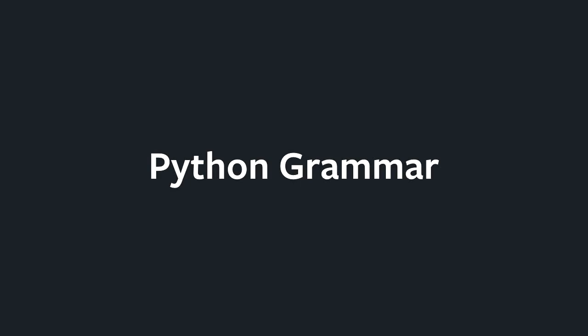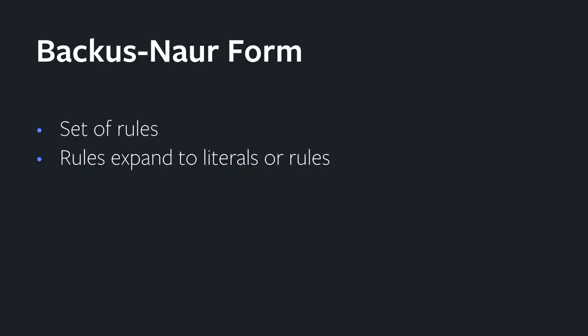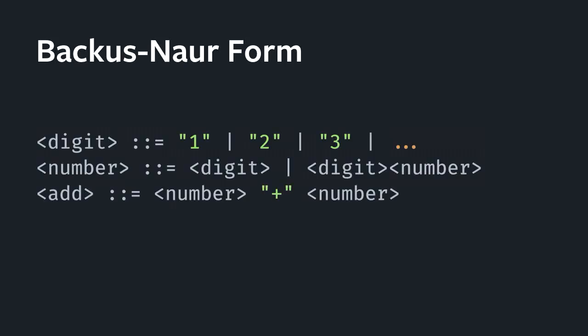Most languages have a grammar that defines what tokens and syntax would be allowed. The most common form is Backus-Naur form, which is essentially a set of rules that expand to more rules or string literals or a combination thereof. If we wanted to look at numbers, you would define some rule with all the string literal digits you would accept, and then build a larger number out of that recursively. If you wanted to add them together, you could have another rule that defines the number, the plus sign, and another number. You generally don't have to worry about white space because the tokenizer will take care of that.